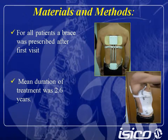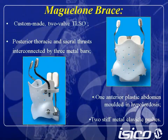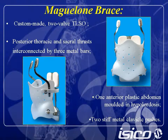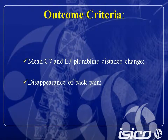At the first visit, a brace was prescribed, and the mean duration of treatment was 2.6 years. We prescribed a Megalign brace — a custom-made tubular TLSO with posterior thoracic and pelvic thrust interconnected by three metal bars. Anteriorly, it is reinforced in high polyethylene with two stiff metal clavicle pushes.